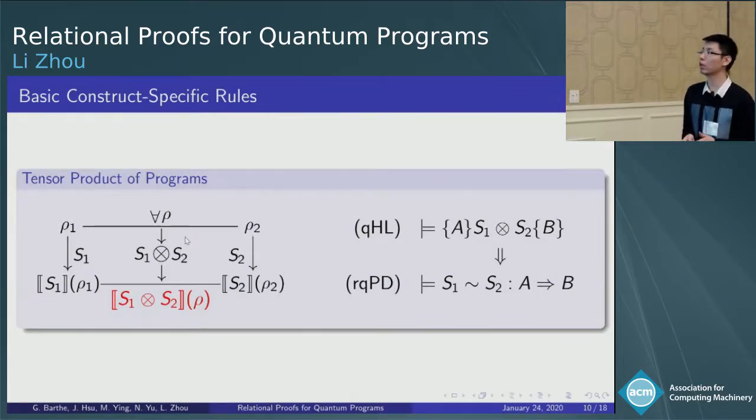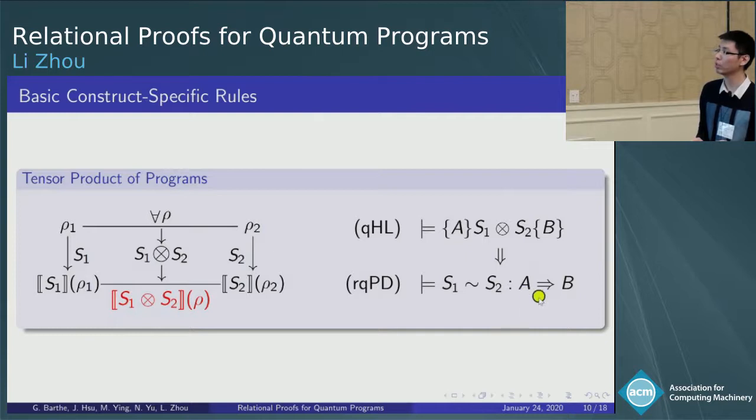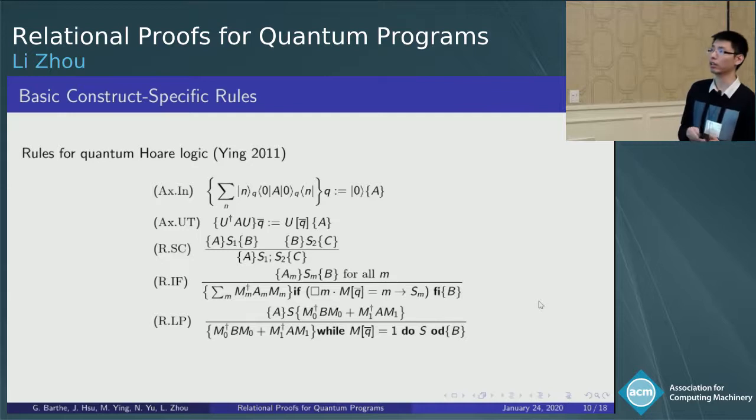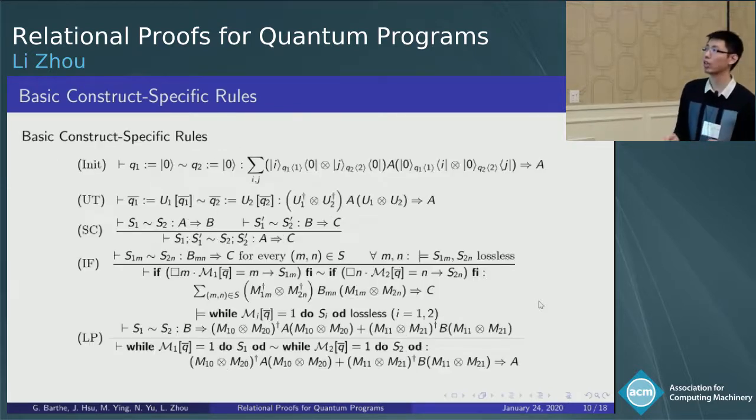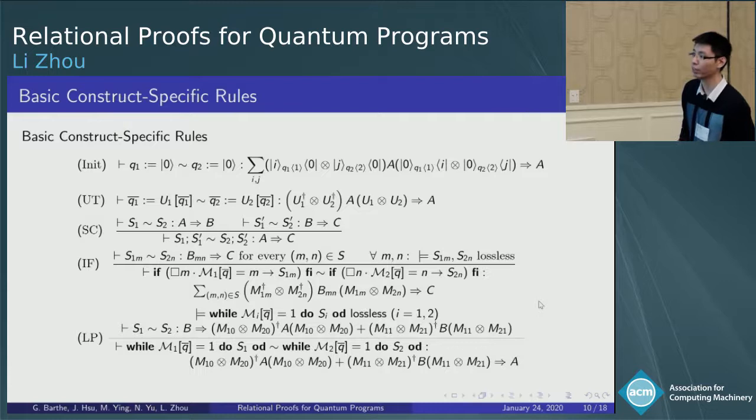For a formula of the tensor product program S1 tensor S2 with precondition A and post-condition B, if it's valid in QHL, then this judgment is also valid in our logic. There are a set of sound and complete rules for quantum Hoare logic, and we can extend them directly as our basic construct-specific rules here.